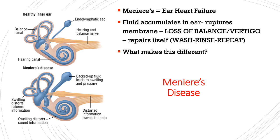With Meniere's disease, fluid builds up, the membrane ruptures, and the patient experiences horrible imbalance — they may be on their back, unable to stand or function. Then the membrane repairs itself, fluid returns to where it's supposed to be, and they're okay for a while. These attacks can happen a couple of times a year or multiple times a month — everyone is different. The imbalance can severely affect the patient's ability to function and creates serious safety issues.